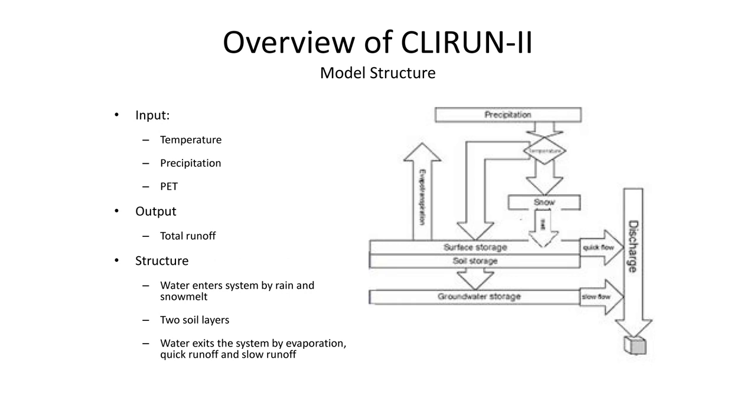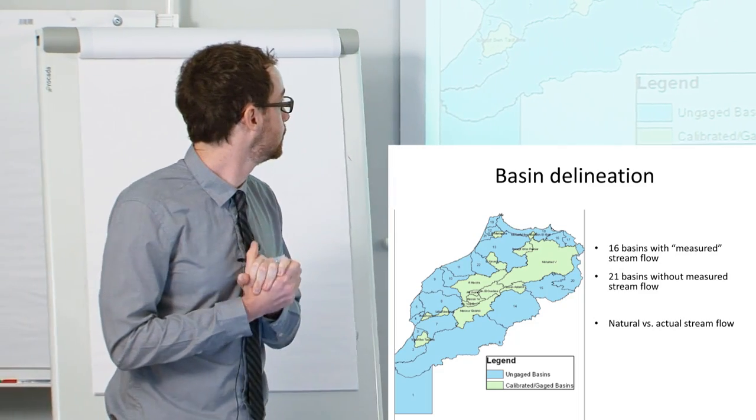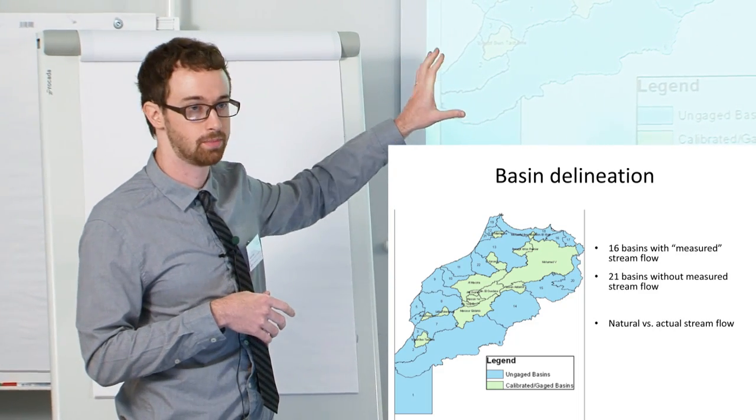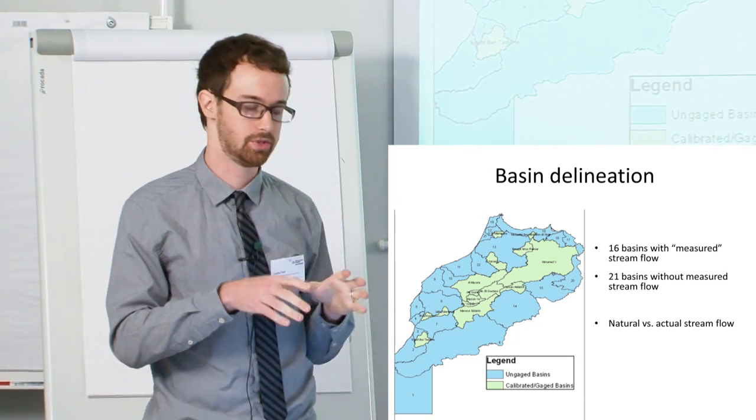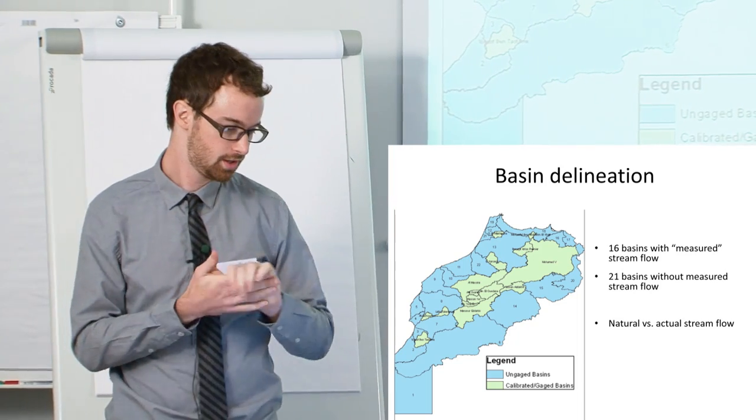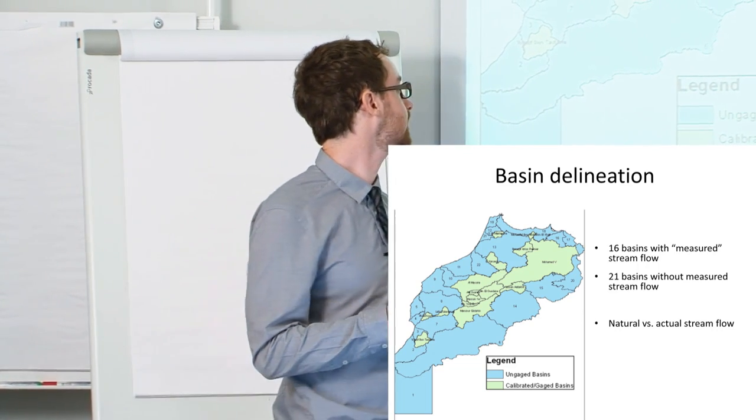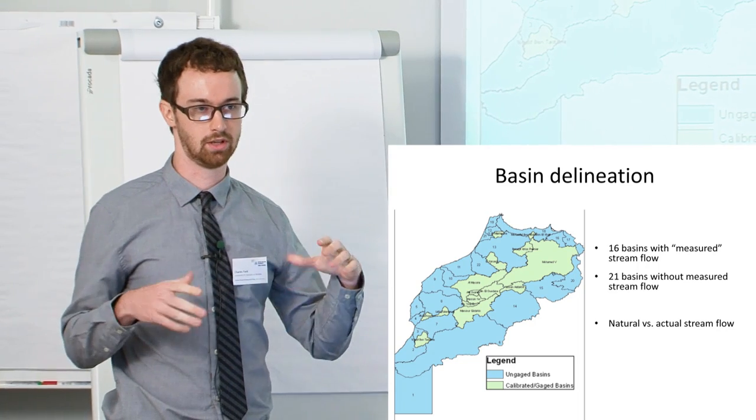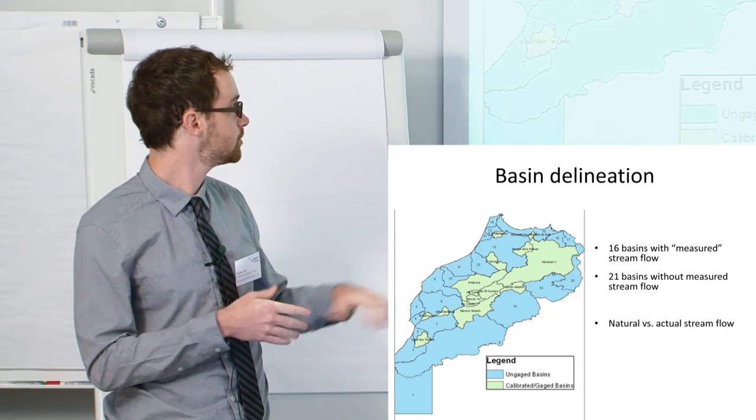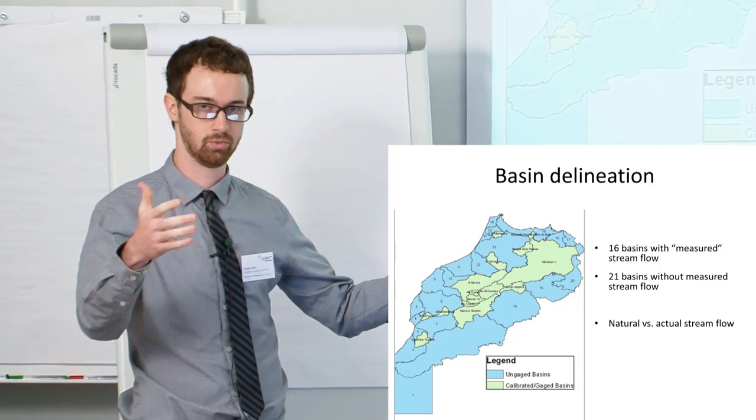This is just a quick schematic. Again, input climate, output runoff. The structure, if you care about these sorts of things, it's two layers. There's quick runoff and slow runoff. And all right, so now to Morocco. So this is our basin map. And so we did this for, this was funded by a group who will remain nameless. And they told us we have people who can go out and get the data. So they went out and got the data.